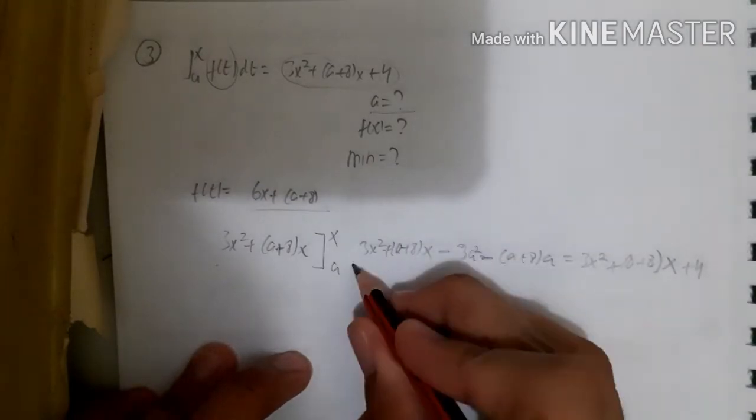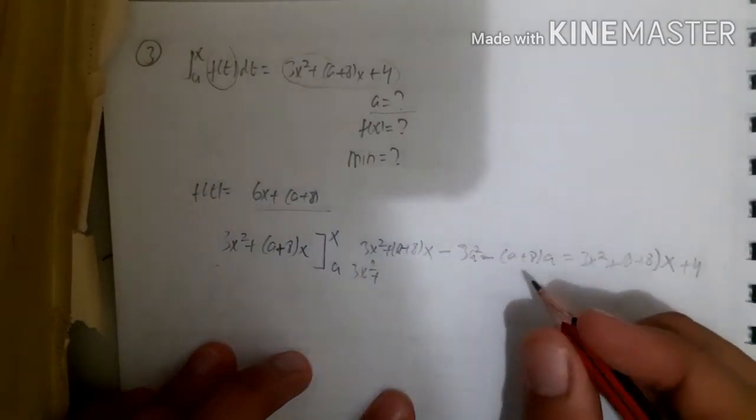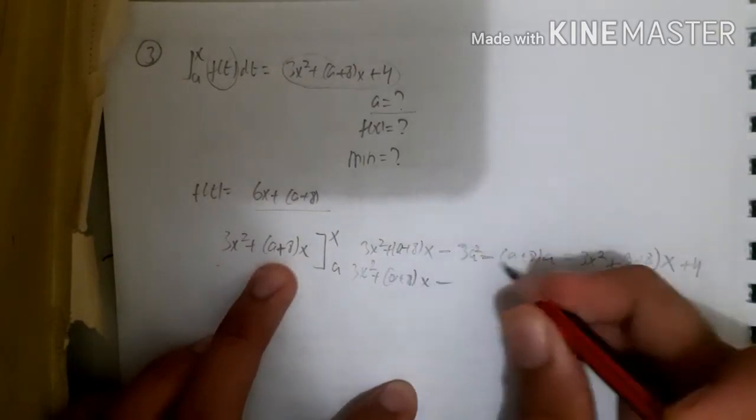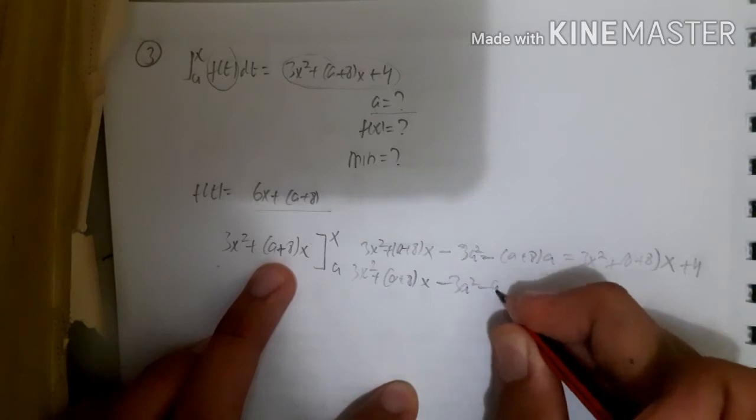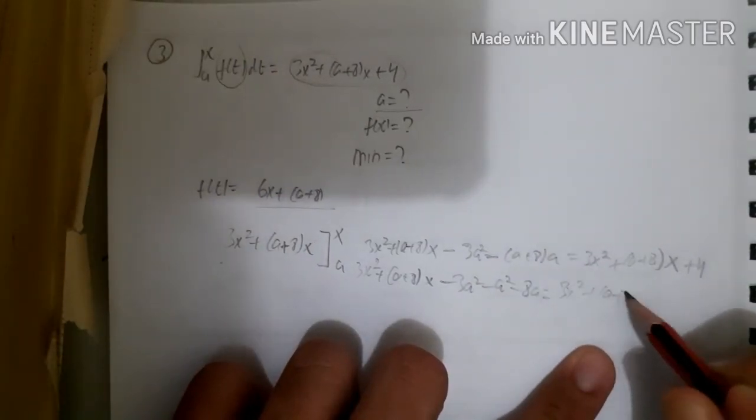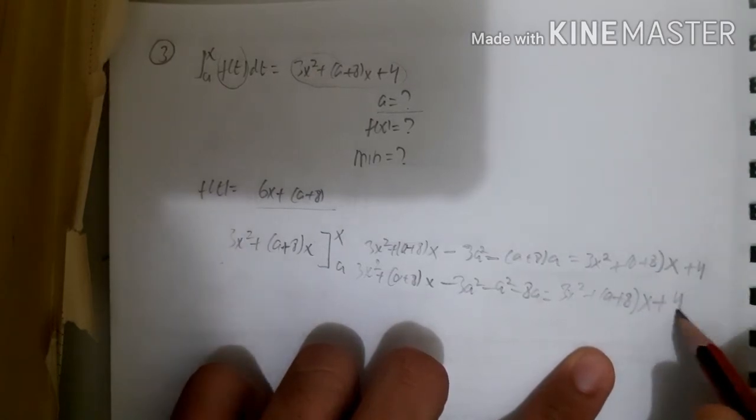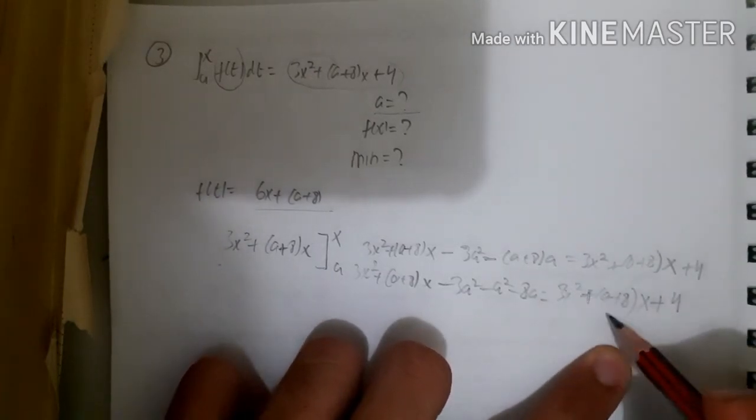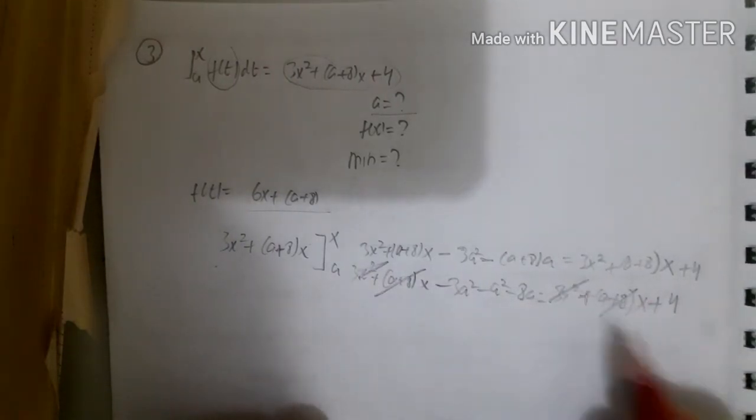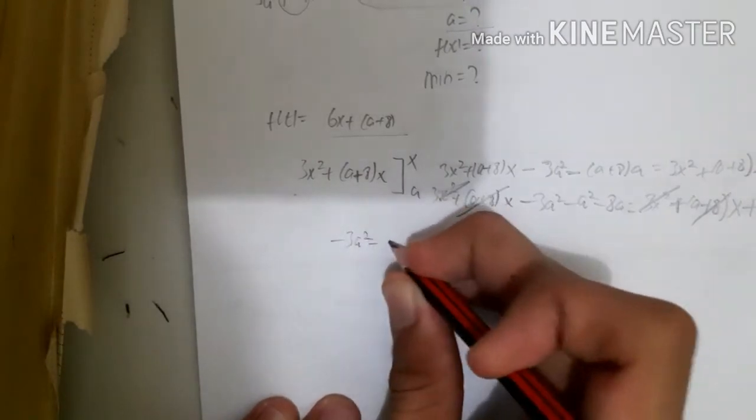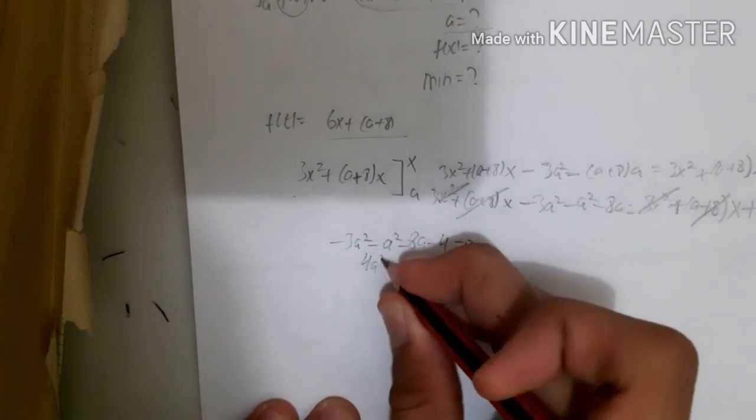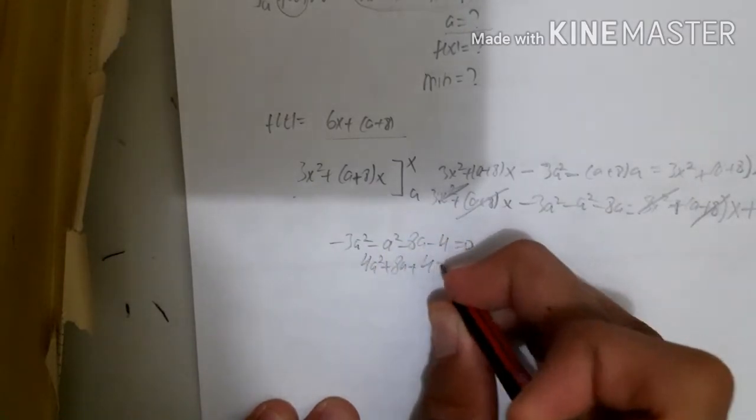So we open all of this: 3x² + (a+8)x - 3a² - a² - 8a equals 3x² + (a+8)x + 4. You can see that the 3x² and (a+8)x will be crossed out altogether. So we're left with -3a² - a² - 8a - 4 = 0, which gives us 4a² + 8a + 4 = 0.